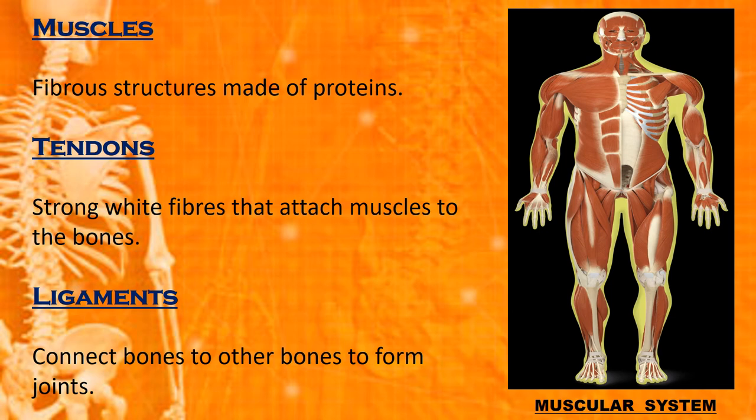So what are tendons? Tendons are strong white fibers that attach muscles to the bones. Next is the ligament. Bones and the joints are held together by ligaments. Ligaments are like rubber bands. Thus, ligaments connect bone to other bones to form joints.